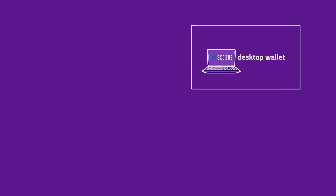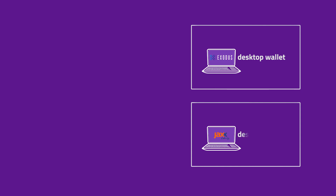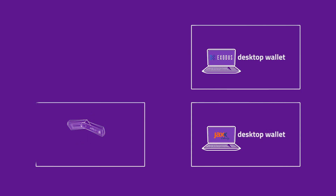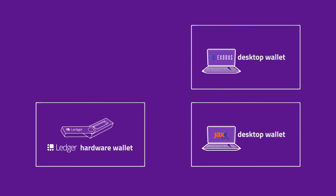If you want to learn about the Exodus desktop wallet, please click on the video in the top right corner. If you'd like to see a video for the Jaxx desktop wallet, please click on the video in the bottom right corner. Finally, the video in the bottom left corner will help you with the Ledger Nano S hardware wallet.